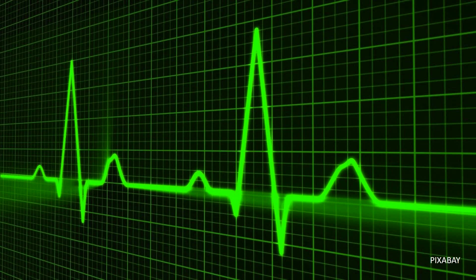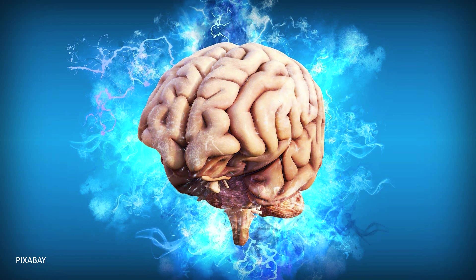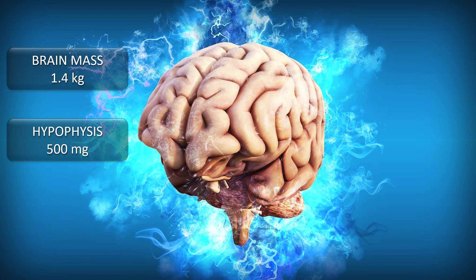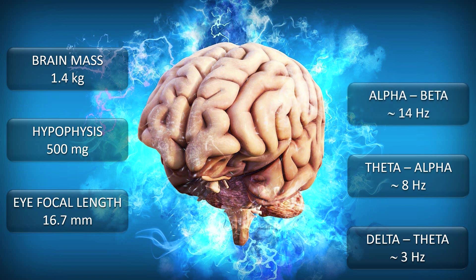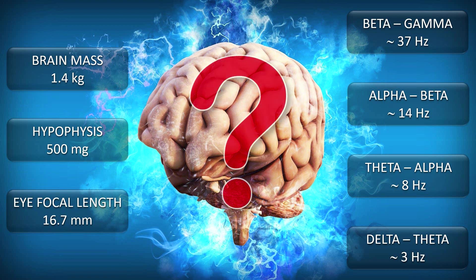Why is the resting heart rate of healthy adults close to one beat per second? Why is the adult human brain mass close to 1.4 kilogram? Why does the hypophysis weigh 500 milligram? Why is the focal length of the human eye 16.7 millimeters? Why does brain activity change from delta to theta at 3 Hz, to alpha at 8 Hz, from alpha to beta at 14 Hz, and from beta to gamma at 37 Hz? All by chance? Actually, conventional models consider many characteristics of human biophysics as accidental.